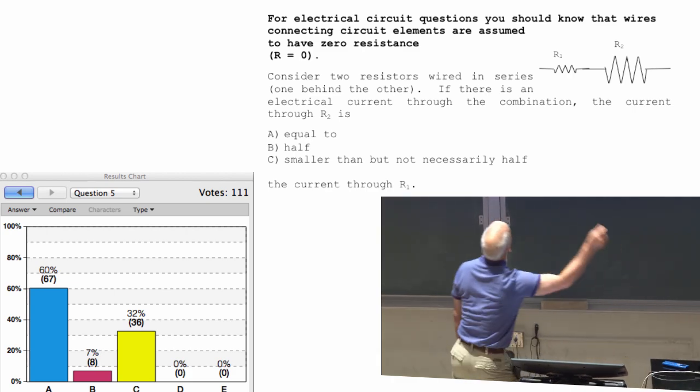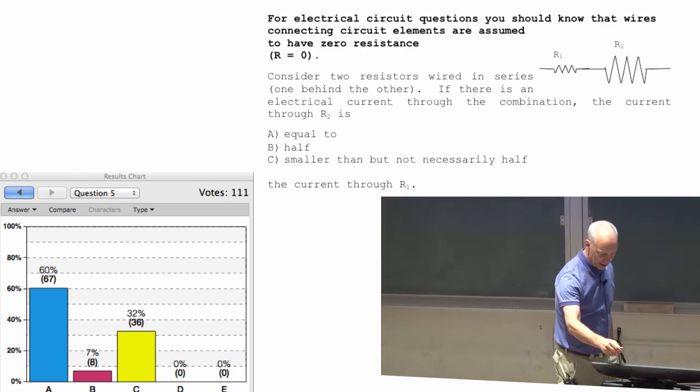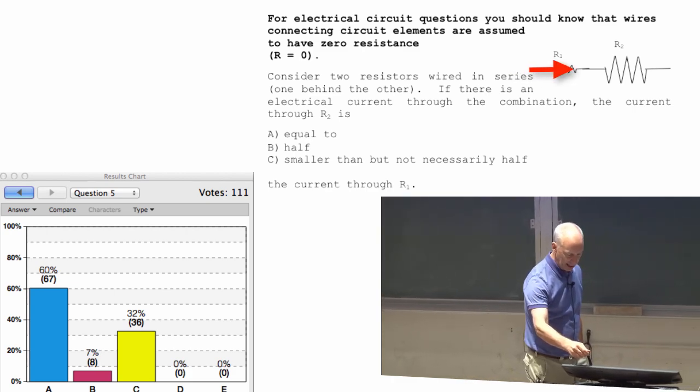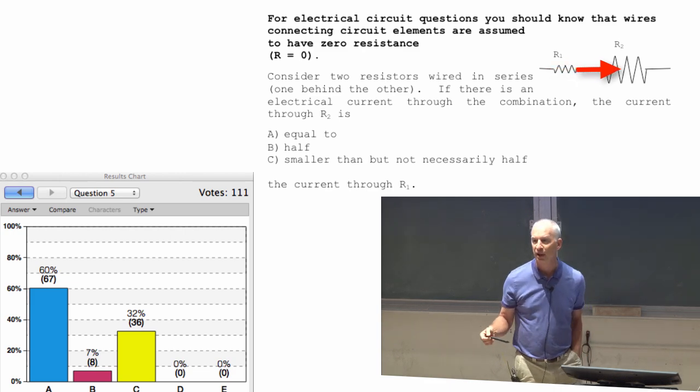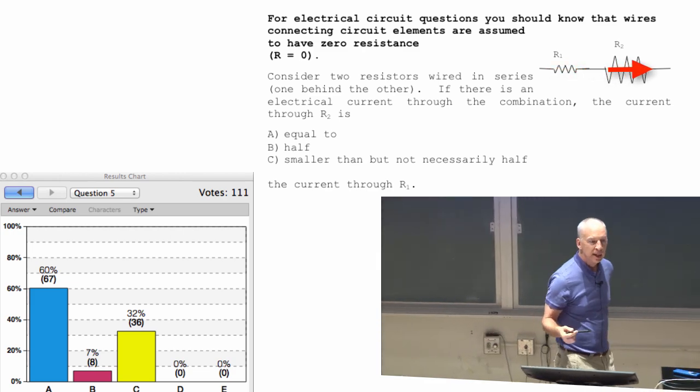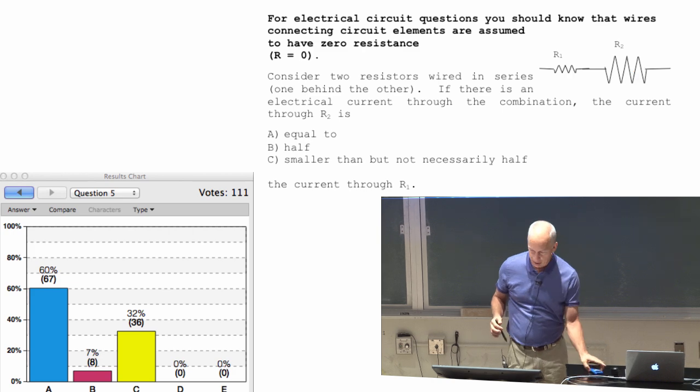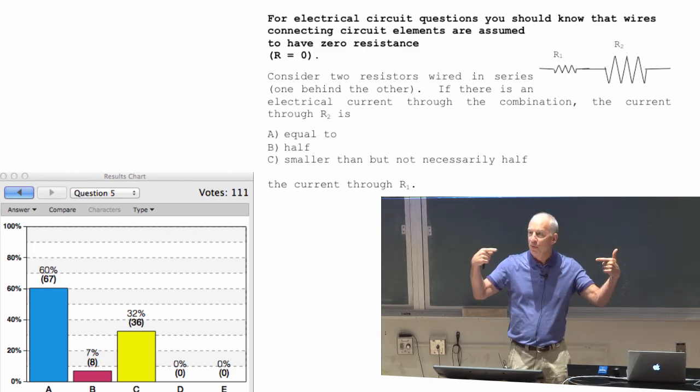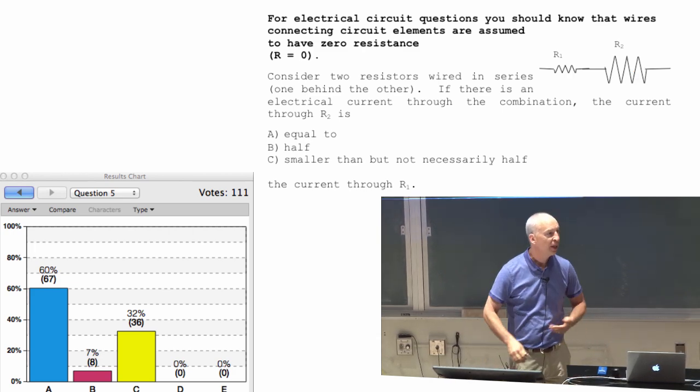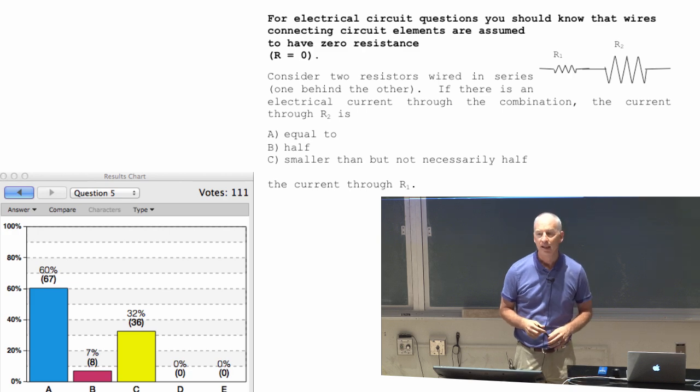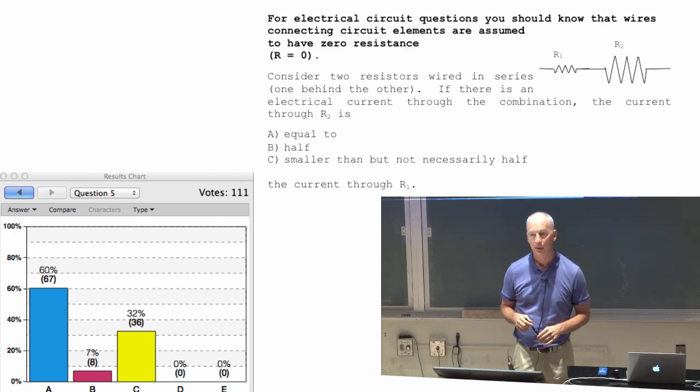If electrical charge is flowing through this one, it has no place to go other than to flow through the second one also. If those two are stacked up, one right after the other, and there's no other place for electrical charge to go, then it has to go through both, or none.